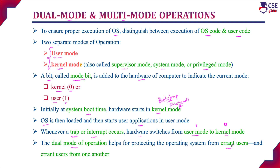If a user program raises some error, that will not affect the operating system mode. The dual mode operation helps protect the operating system from erroneous users — if one user is executing a program and that program raises any error, it will not affect the operating system or other users. This distinction is mainly provided by user mode and kernel mode.